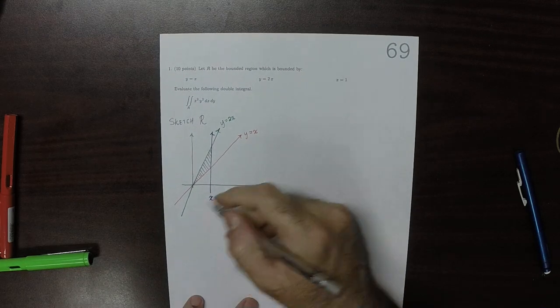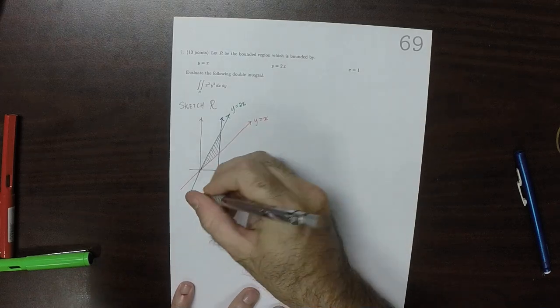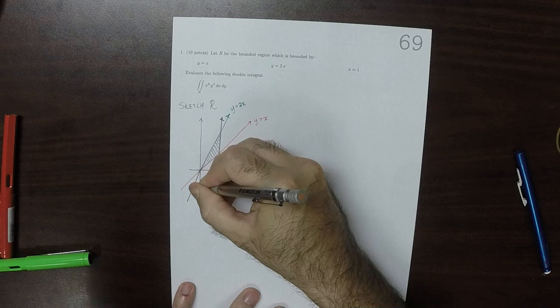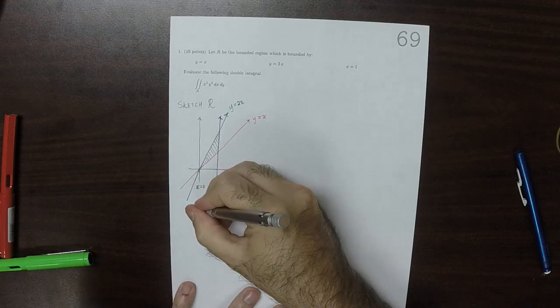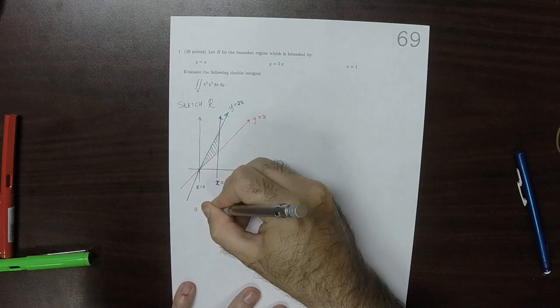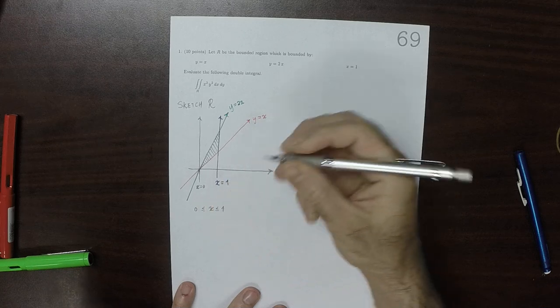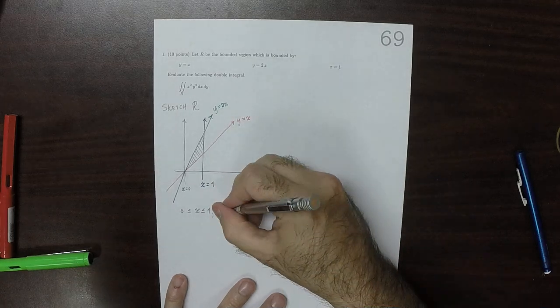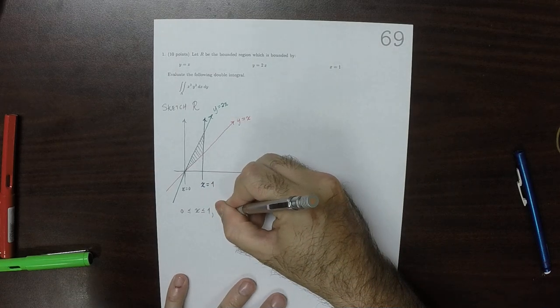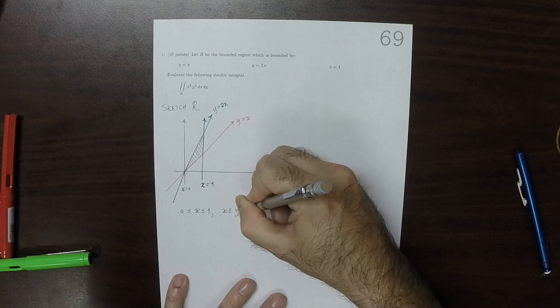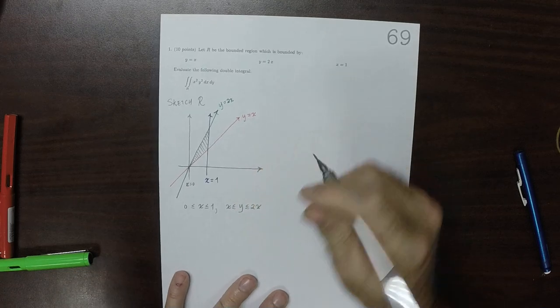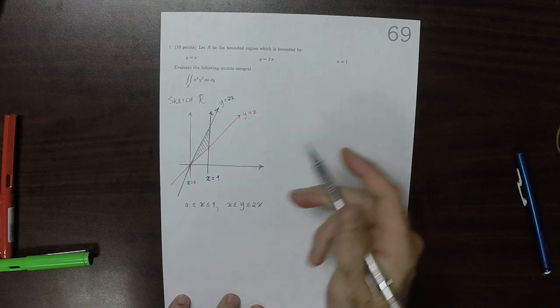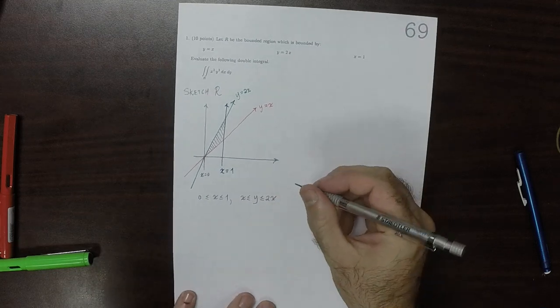So we could give it a description between X constants. Continuing this down, this would be X is 0. It exists between 0 is less than or equal to X is less than or equal to 1. That's the constant X bounds. And then the Y bounds would be X less than or equal to Y less than or equal to 2X. And because we can get X between constants, that means we'll do X's as the outside integral.